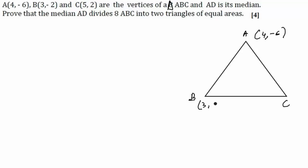(3, -2), and (5, 2). AD is the median. Prove that the median AD divides triangle ABC into triangles of equal area. This will be done in two steps: first we'll find the coordinates of D, and